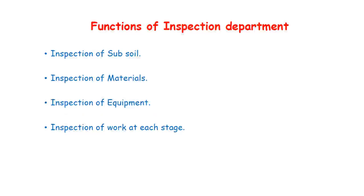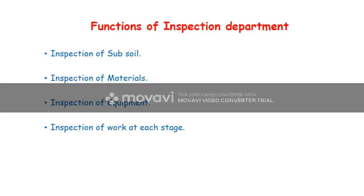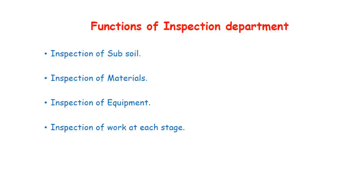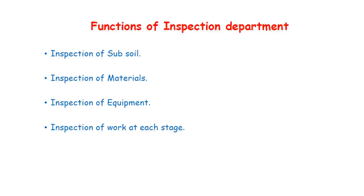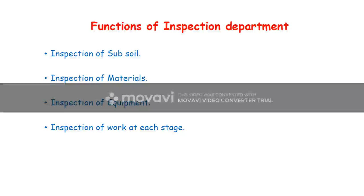Inspection of materials means that during the construction process, whatever materials the contractor is using have to be properly inspected. He must be using the required materials as mentioned in the designer's guidelines — whether he is using OPC cement, PPC cement, or 43 grade cement must be specified. The grade of steel, its dimensions, and its strength all have to be verified. Similarly, whatever bricks are used — first class or second class — and their structure have to be properly inspected.